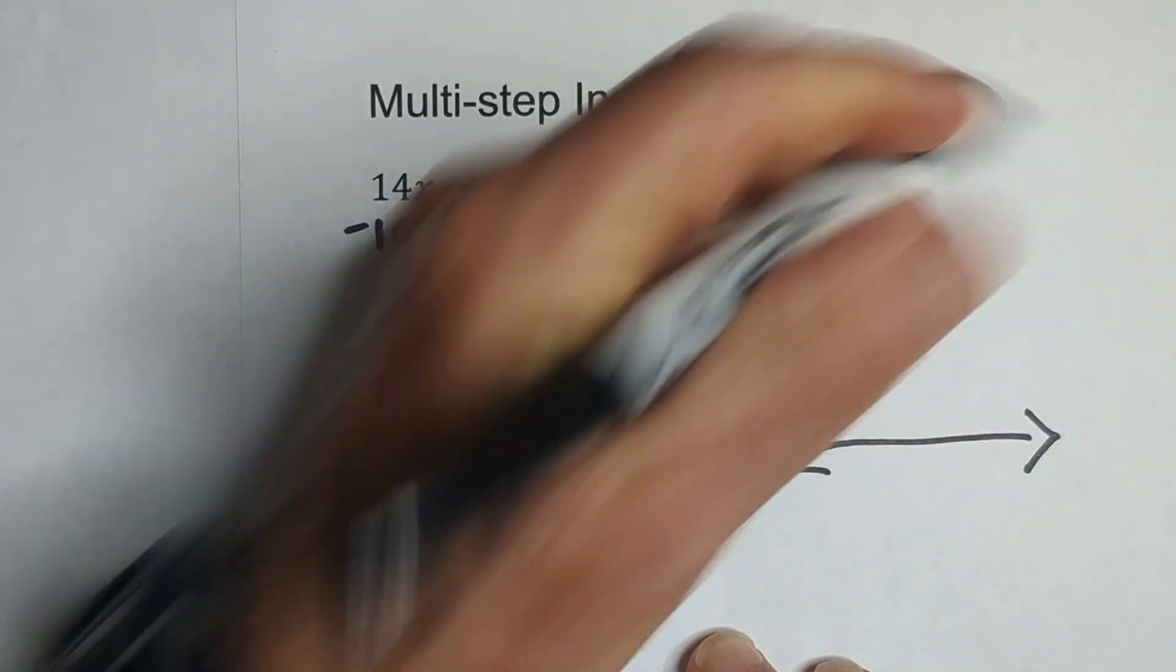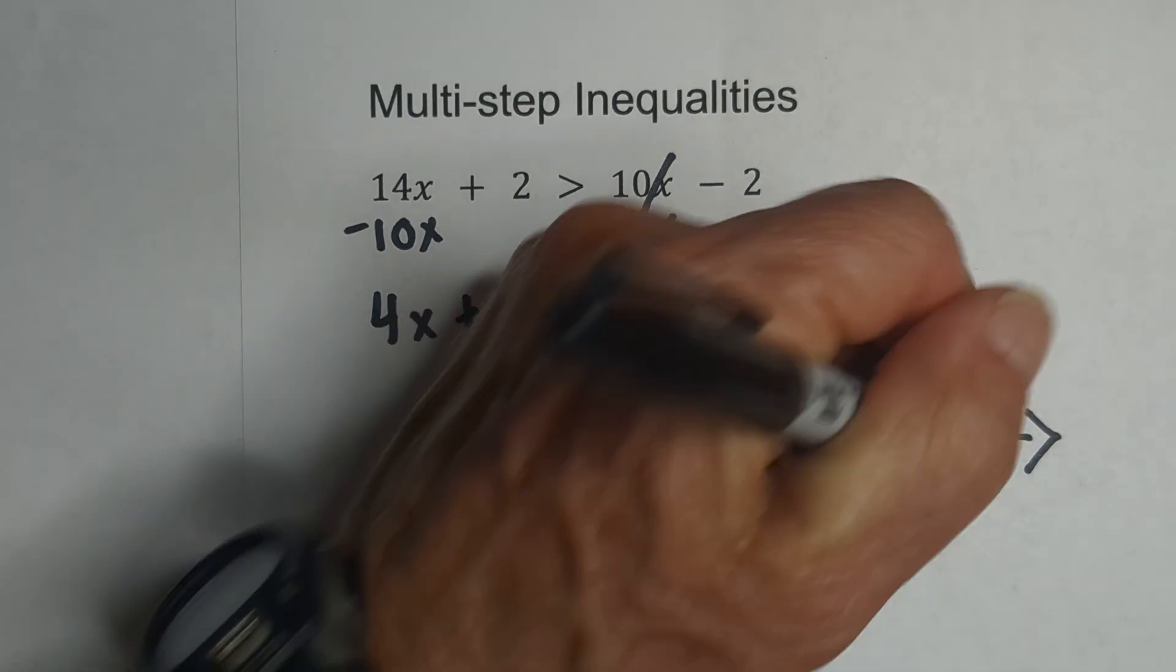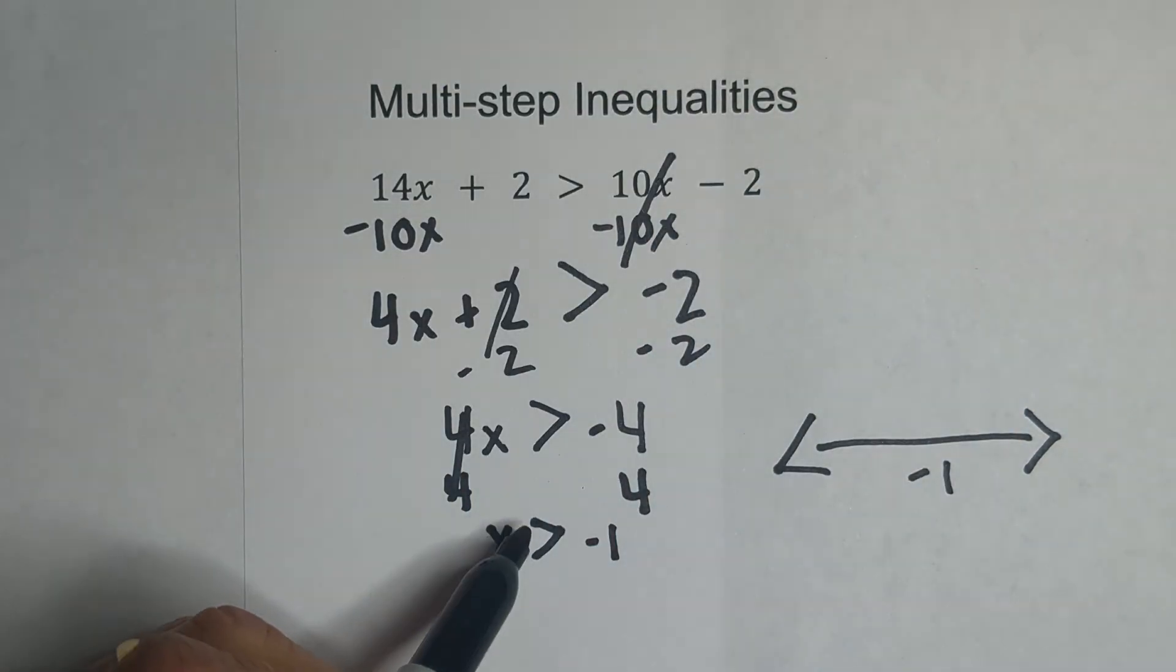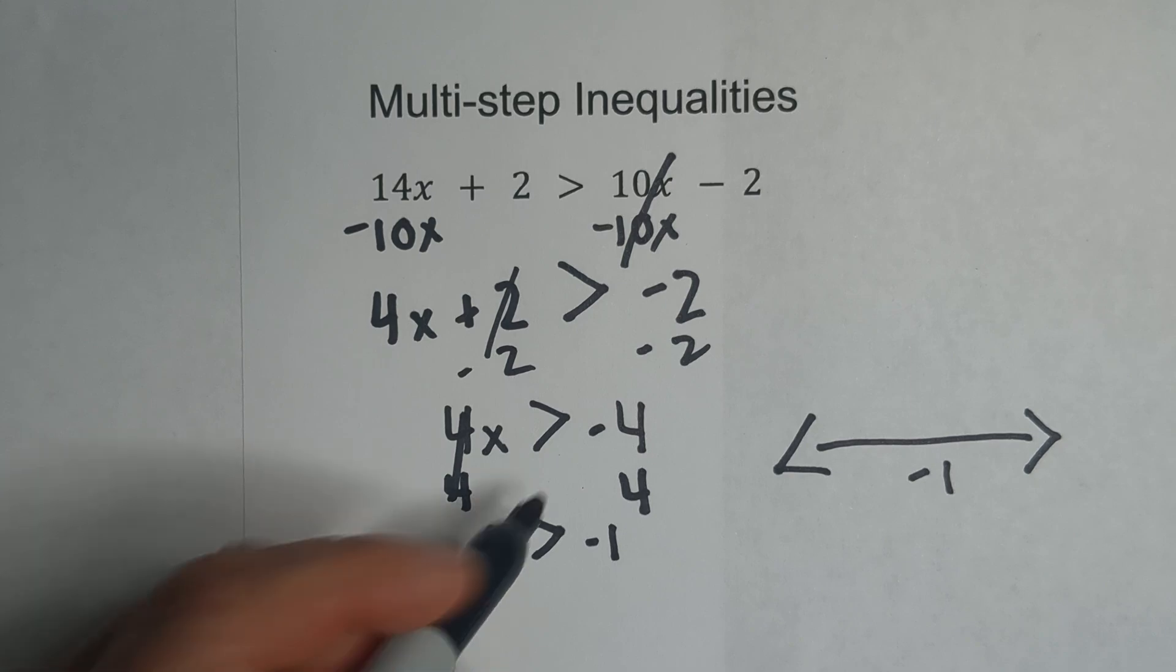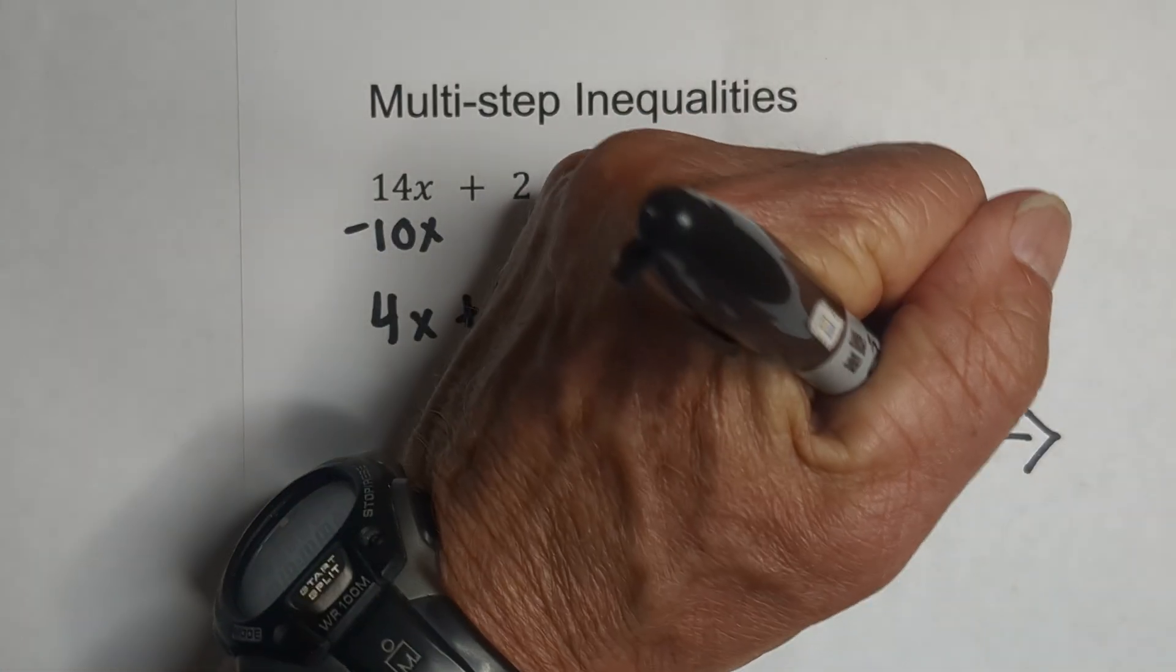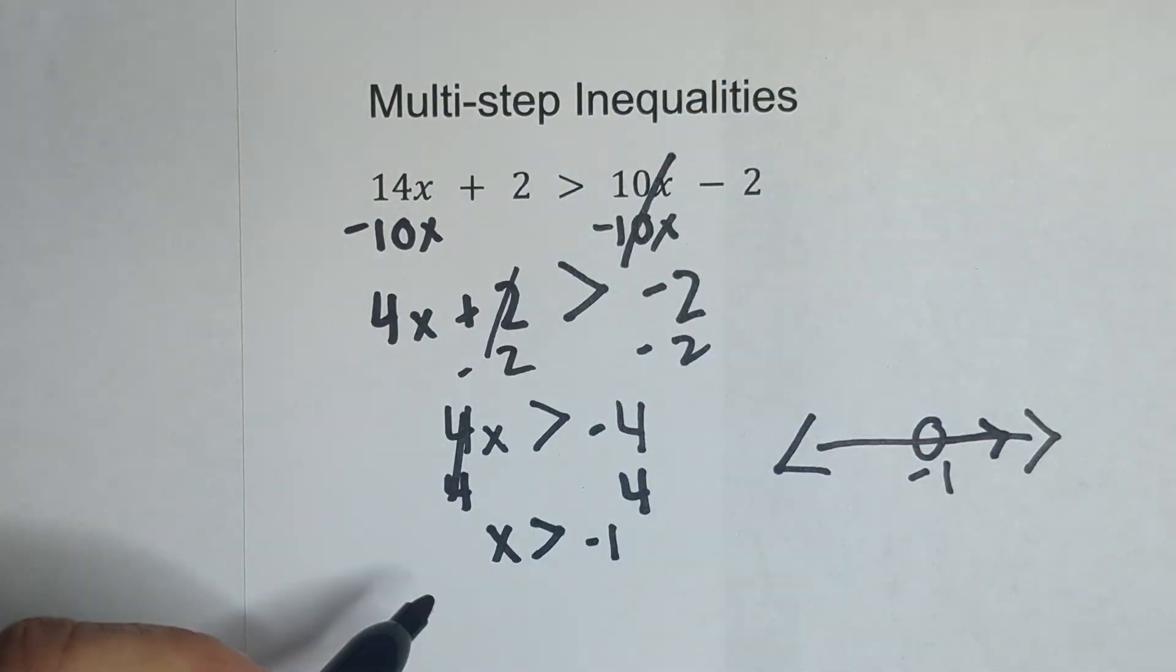If we want to put it on the number line, we can. Let's go negative 1. It will be open because it is not greater than or equal to, and it's going to be greater than negative 1.